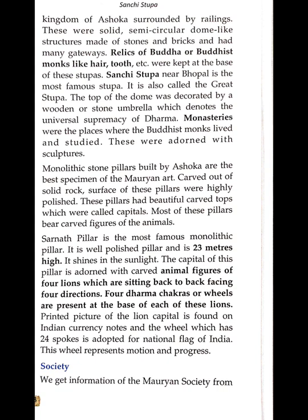Stupas were solid semi-circular dome-like structures made of stone and bricks with many gateways. Relics of Buddha or Buddhist monks such as hair and teeth were kept at the base of the stupa. The Sanchi Stupa near Bhopal is the most famous, also called the Great Stupa. The top of the dome was decorated by a wooden or stone umbrella denoting the universal supremacy of Dharma. Monasteries were places where Buddhist monks lived and studied, adorned with sculpture.